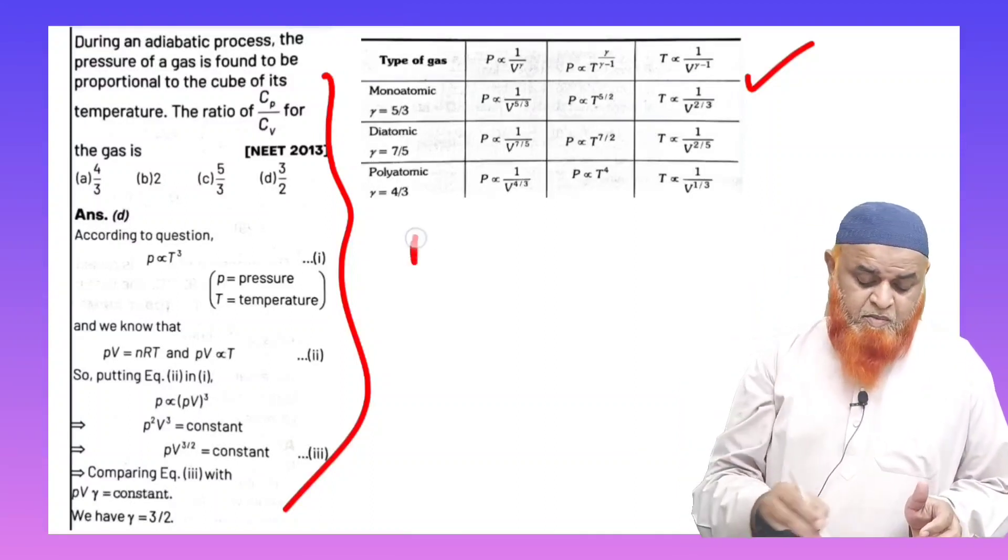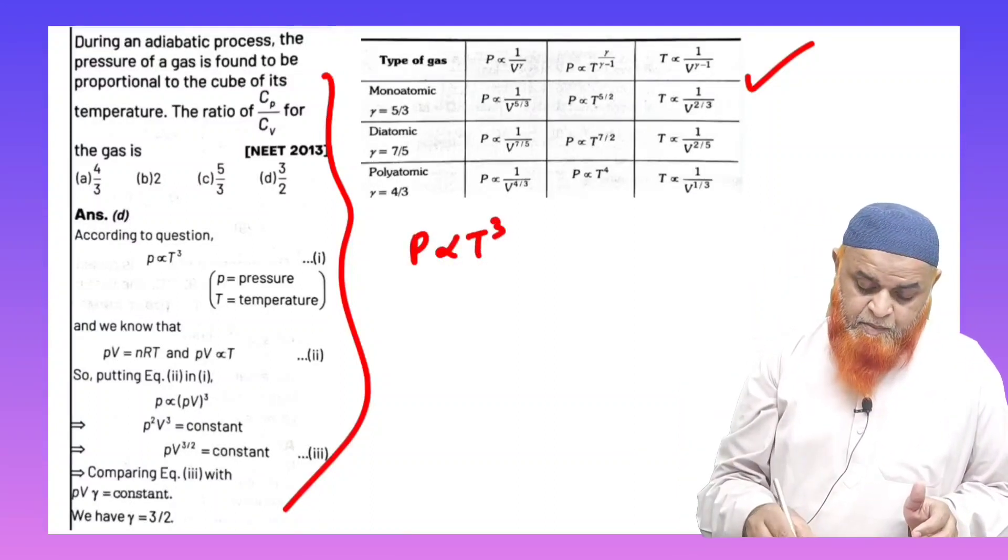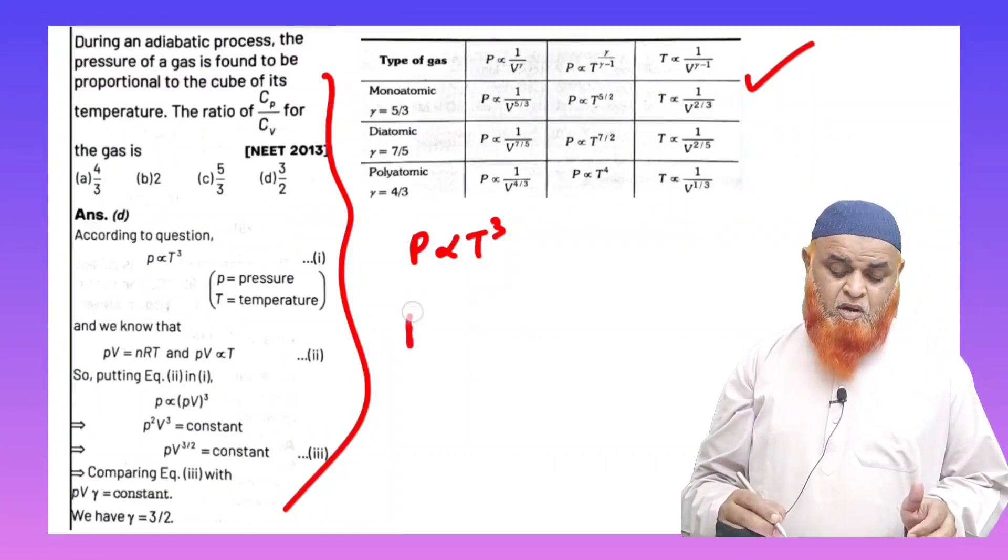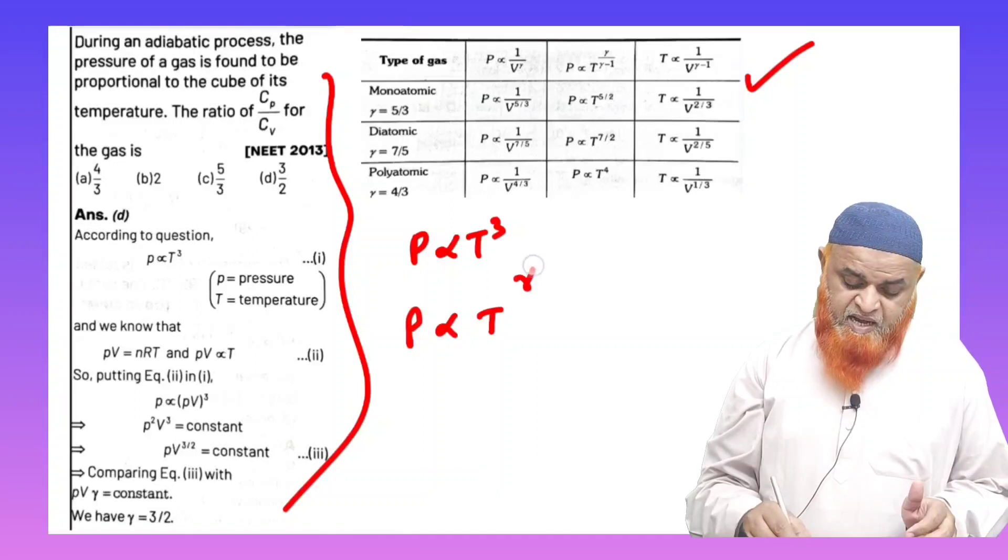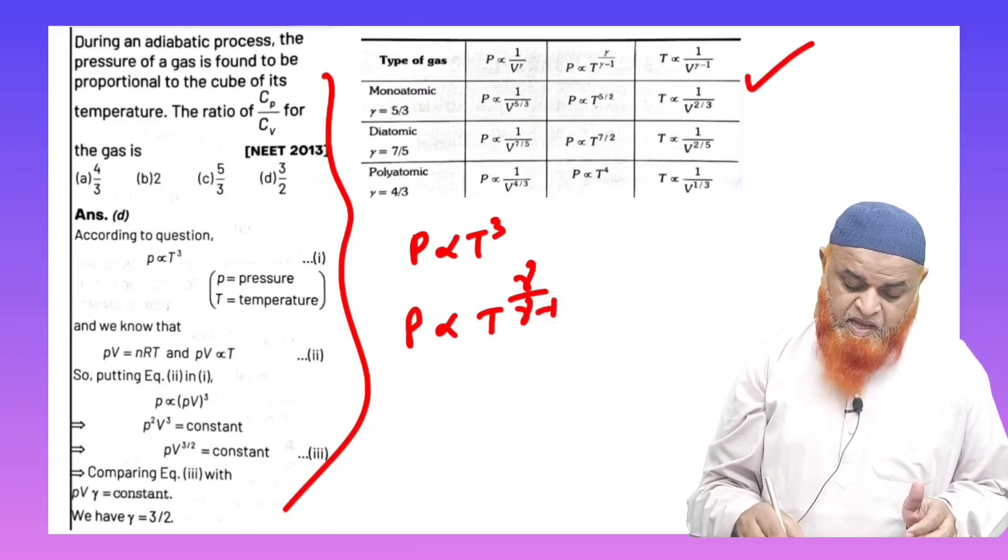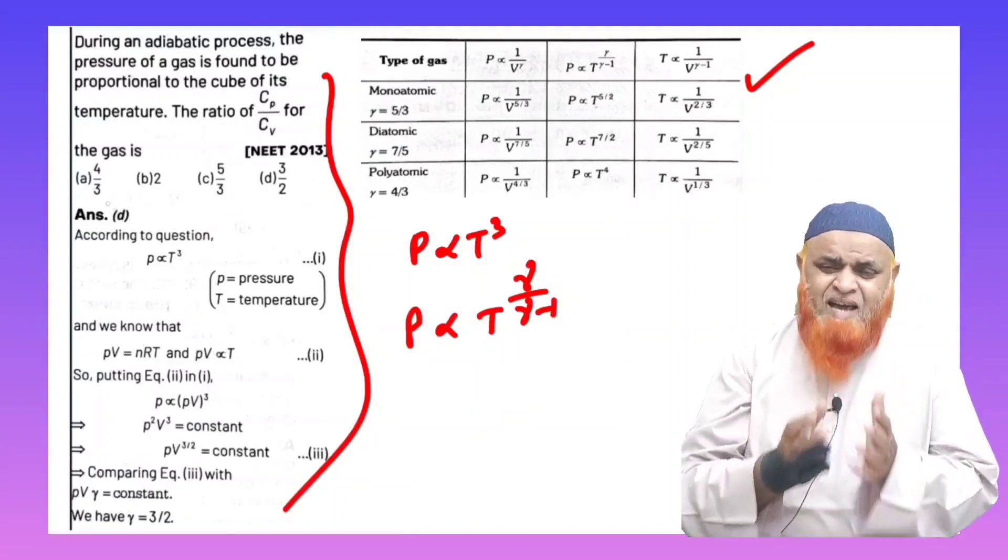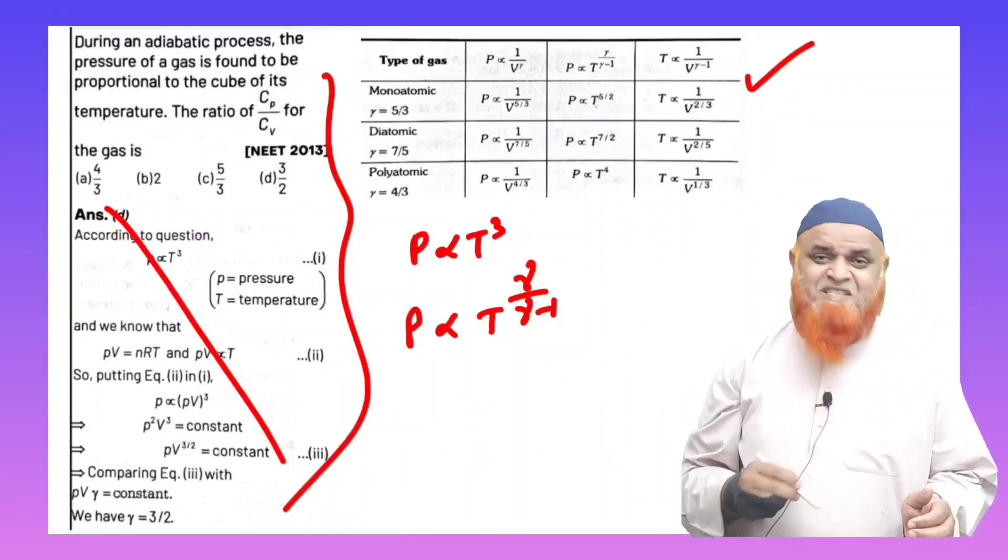So according to this problem given here, P is directly proportional to T to the Q. But in this shortcut problem, tabular column, you'll get one thing: that P is directly proportional to T power of gamma by gamma minus 1. If you compare the powers of these two equations, directly you'll get the answer. Why do you go for this method?